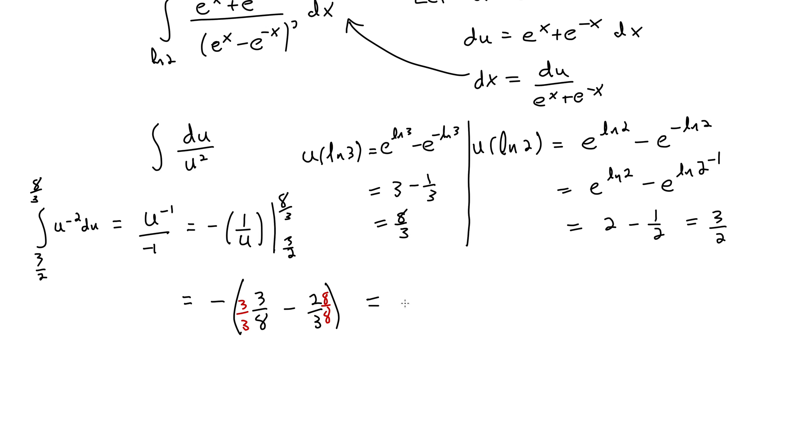So this is negative 9 minus 16 all over 24. So that's 9 minus 16 is negative 7. But we have a negative out front. So back to positive 7 over 24.